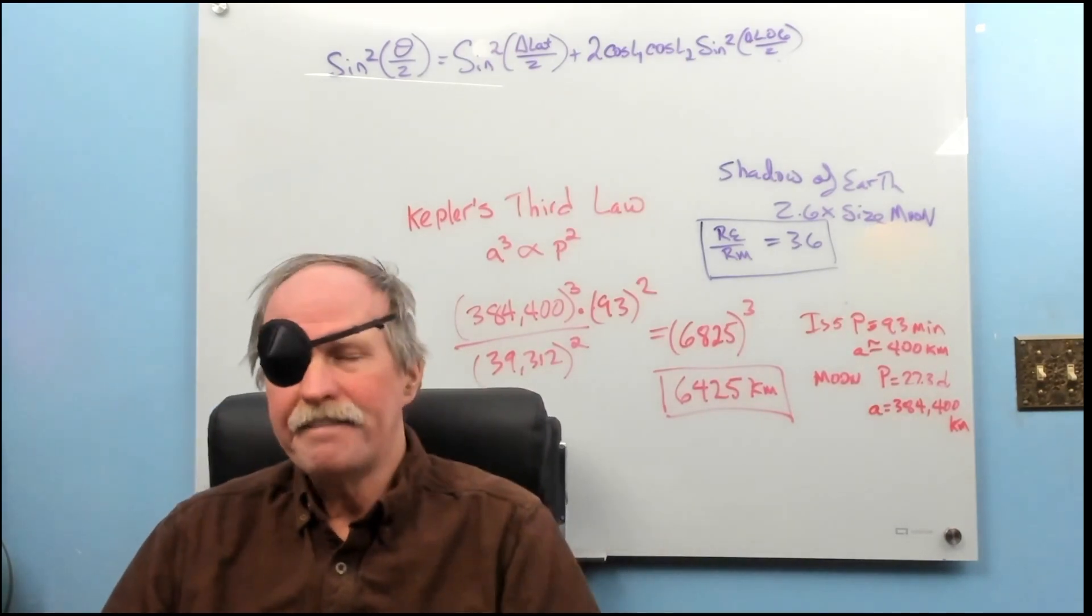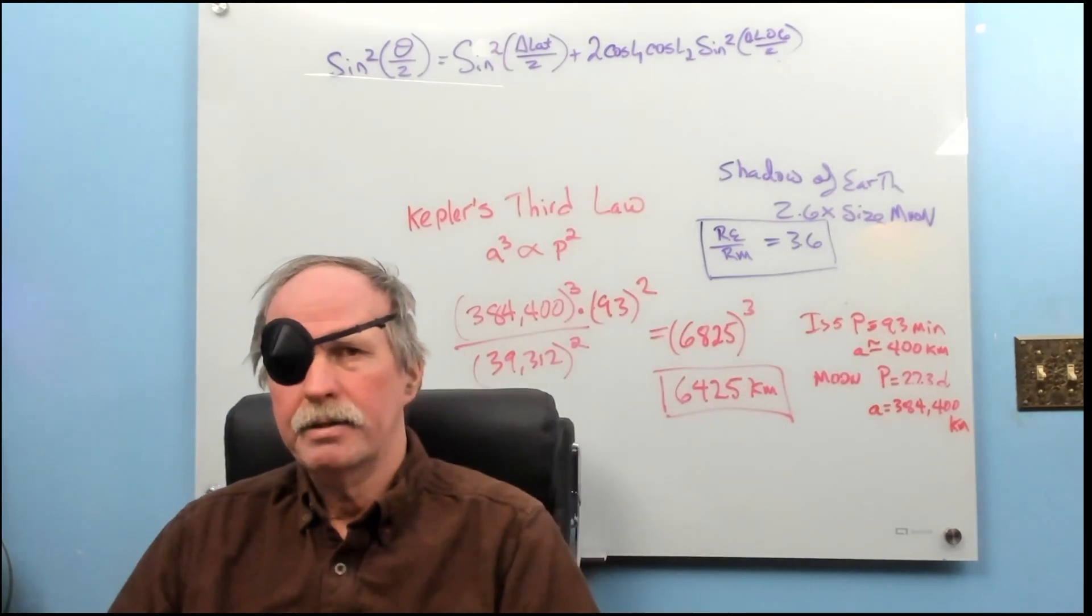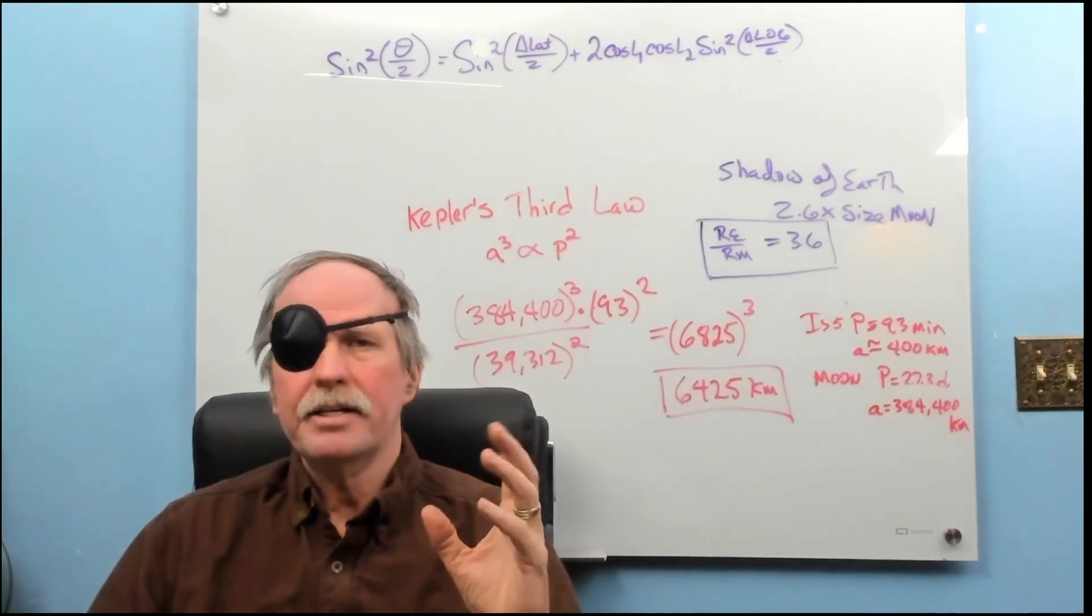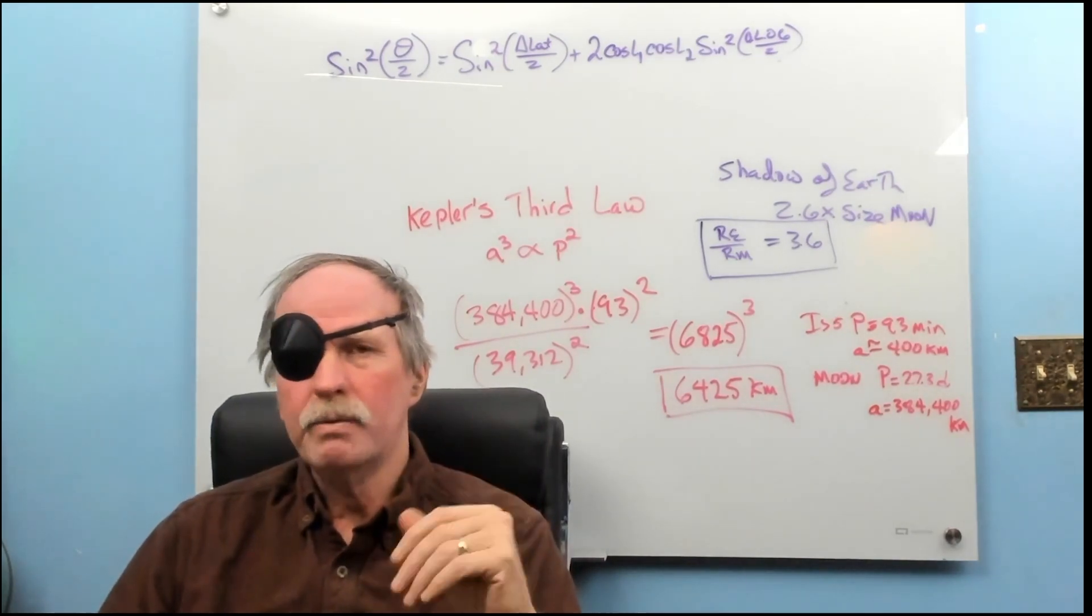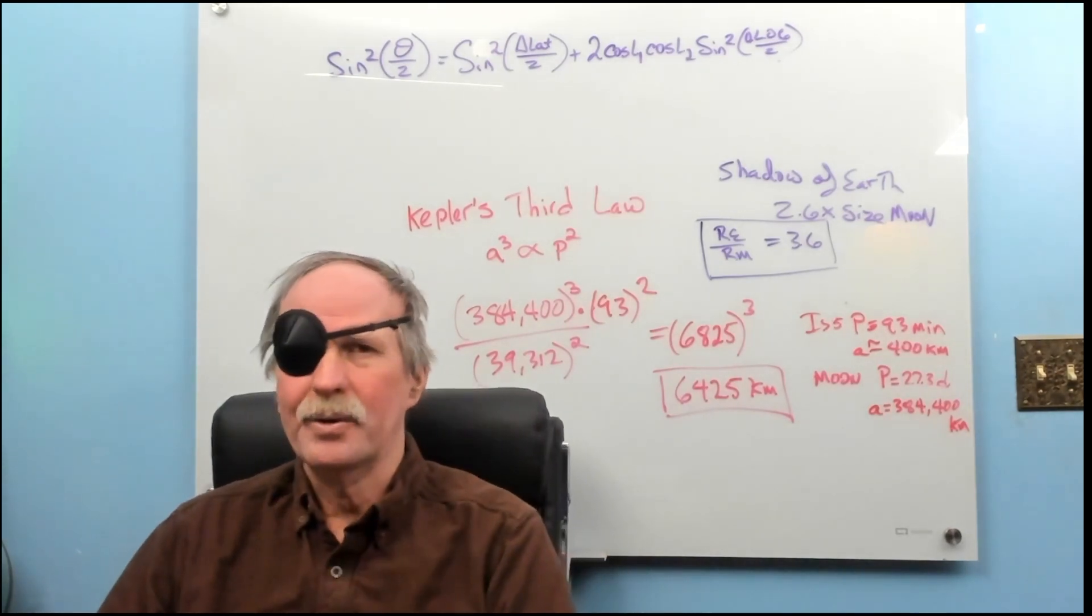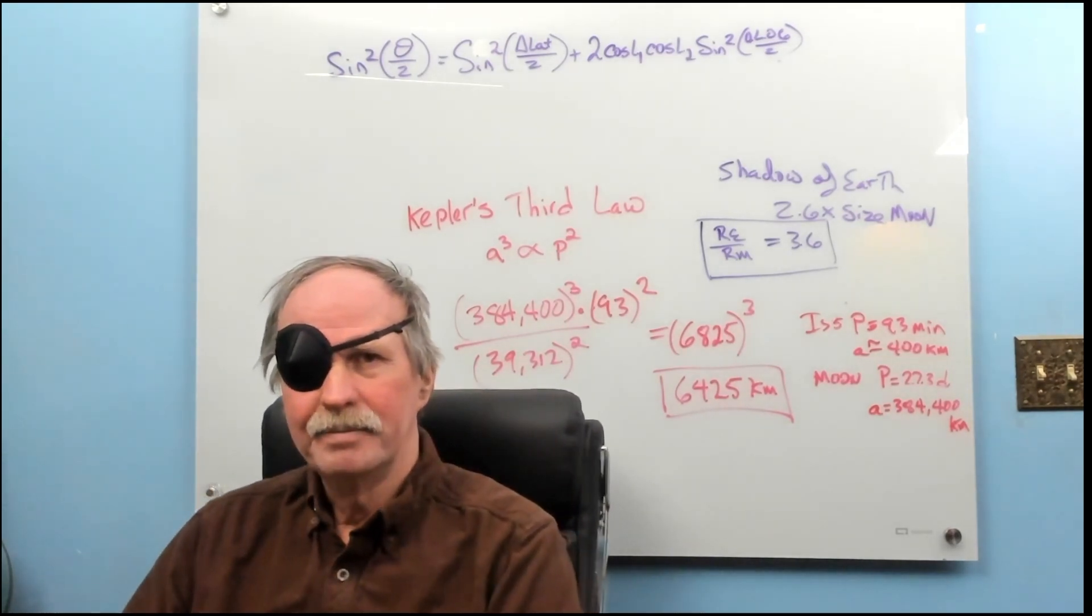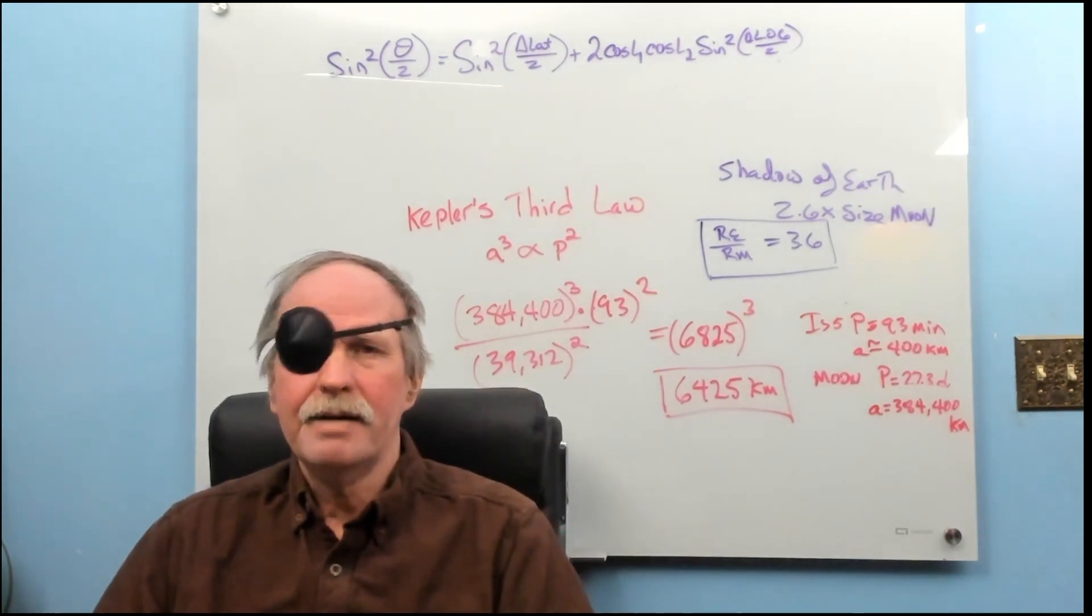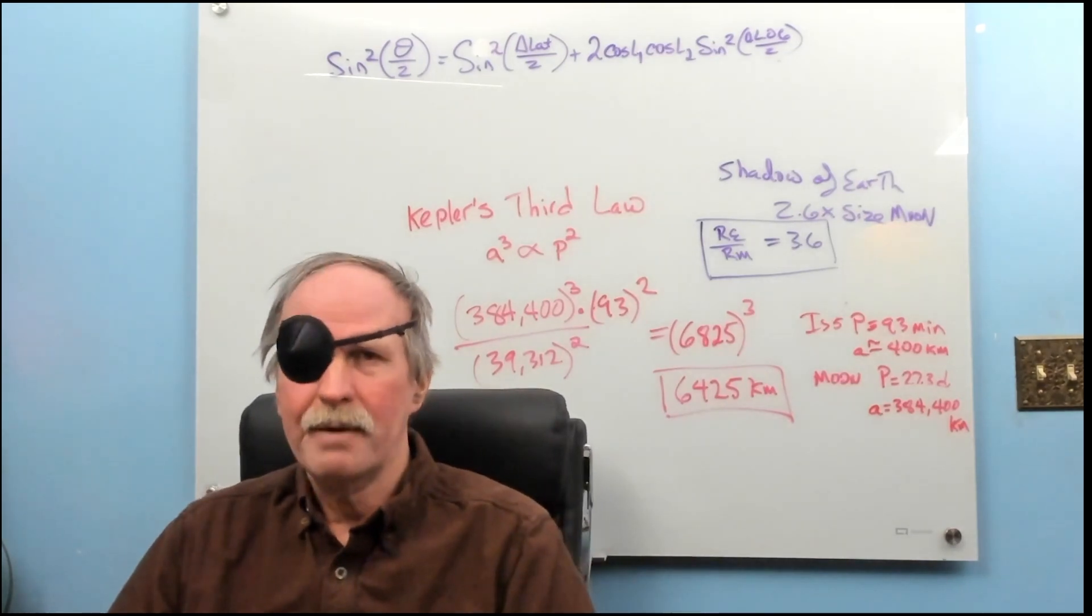When you have five different measurements, looking at five different parameters and data sets, and all come back to the same radius of the Earth within one or two percent, we can have a lot of confidence that that's the correct R. So, Nathan, there you go. You say we don't have R? There's five reasons why we do.